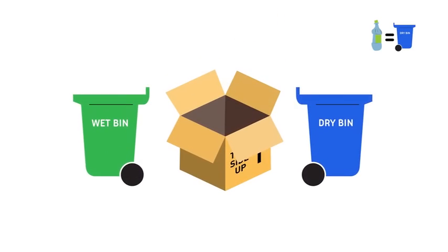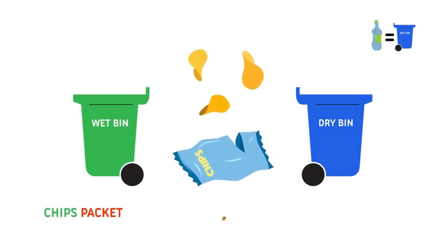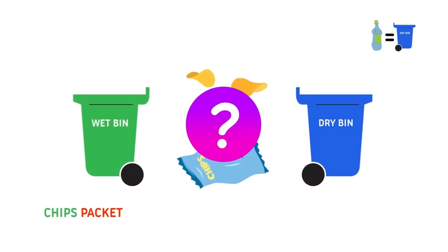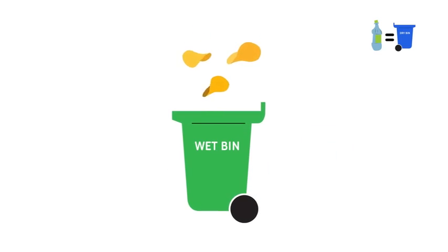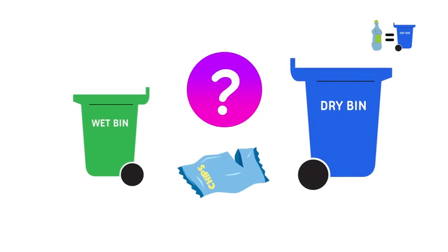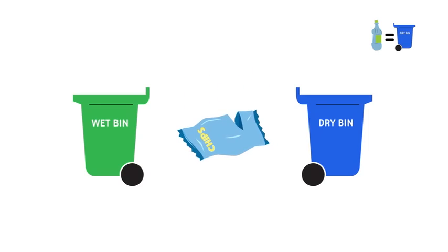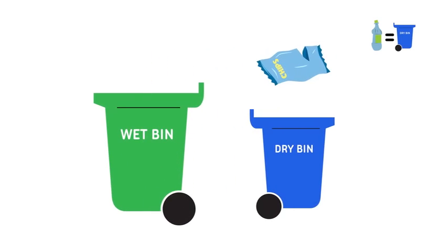Now let's try a second item. A packet of chips. Does this go into the dry or wet bin? What do you say, Explorers? Chips go into the wet bin. Chips come from potatoes and is natural, so it can go into the wet bin. What about the packet? Where do you think this goes? The wet or dry bin? Think carefully. What are chips packets made of?